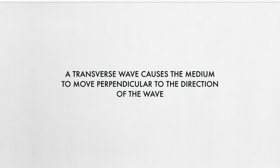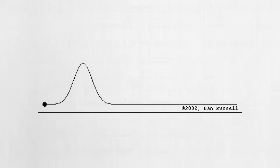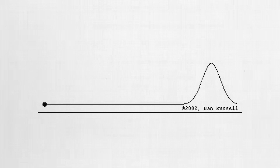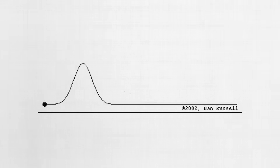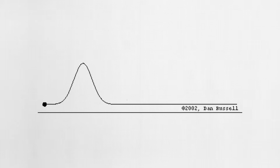In basic terms, a transverse wave causes the medium to move perpendicular to the direction of the wave. This type of wave can be observed with a string: when one end of the string is moved up and down, it creates a disturbance in the string that will ripple to the other end.